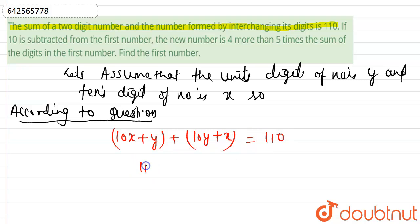So 11x plus 11y equals 110. We can clearly write x plus y equals 10. This is equation 1.